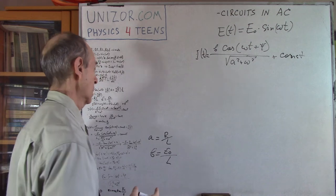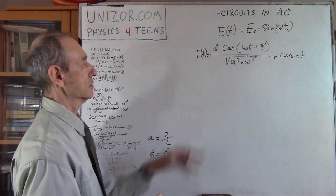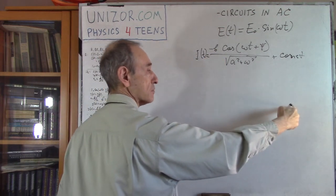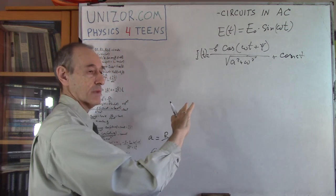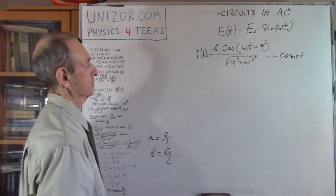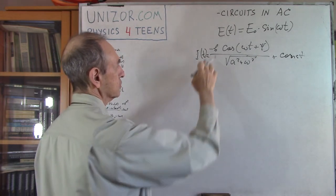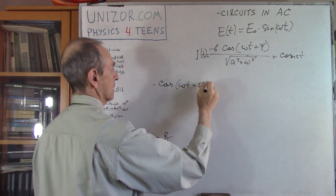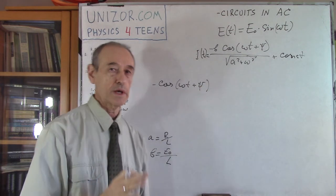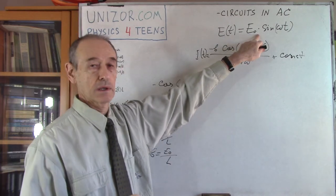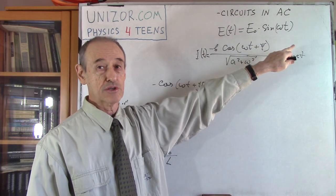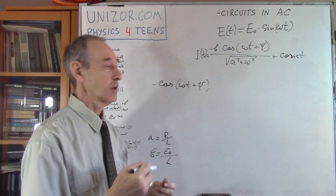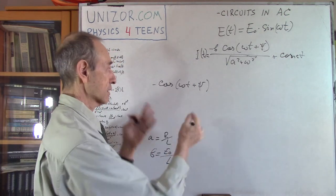Now if we put our values back. I think I forgot the minus sign — yes. We had sine·sine minus cosine·cosine, which is minus cosine of their sum. So it's minus cosine of (ωt + ψ). I would like to change minus cosine to sine, because my EMF is expressed as an oscillation of sine, and I would like my current to also be in terms of sine with some phase shift.